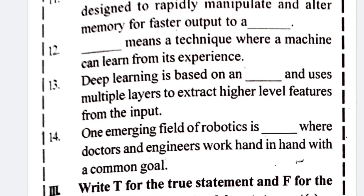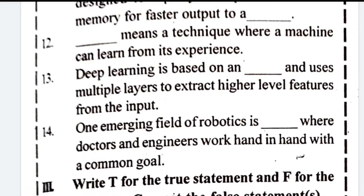Number twelve: the technique where a machine can learn from its experience — the answer is machine learning. Number thirteen: deep learning is based on ANN and uses multiple layers to extract higher-level features from the input.